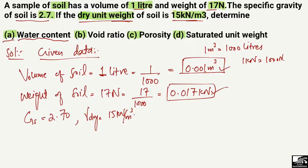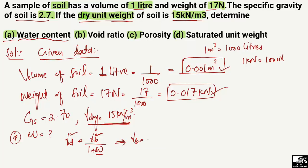The first unknown is water content, which is expressed as a percentage. The formula we use is: dry unit weight equals bulk density divided by (1 + w). We know the dry unit weight is 15 kilonewton per cubic meter, but the bulk density is unknown, so we must find it first.